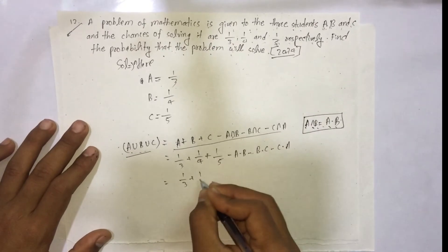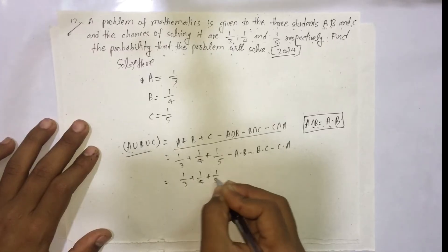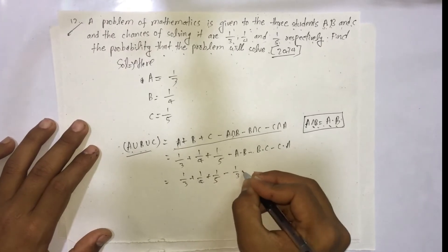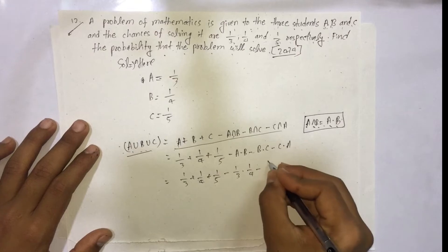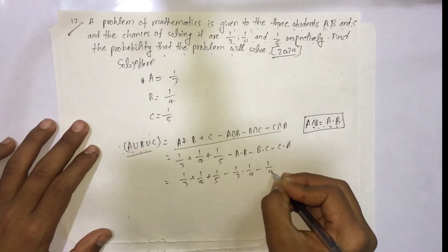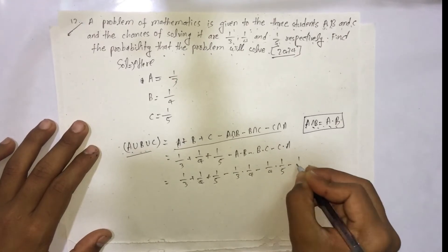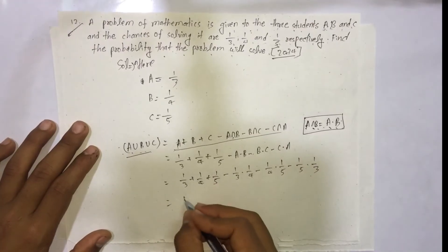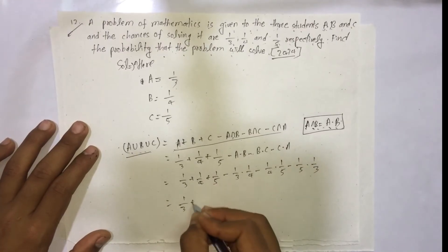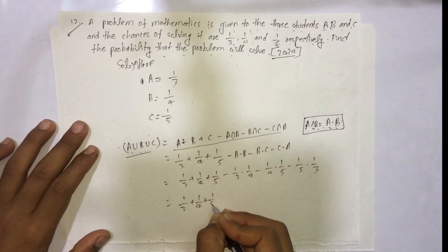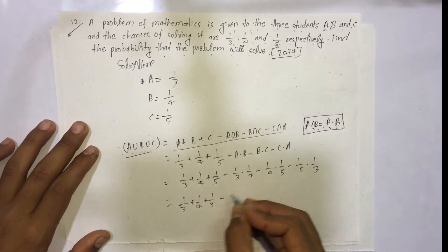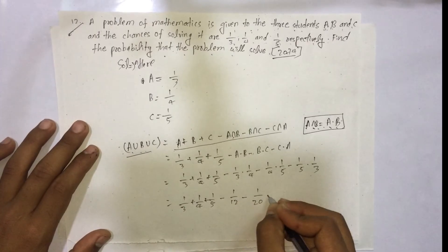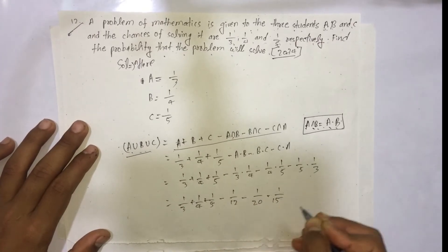So we have 1/3 + 1/4 + 1/5 minus (1/3 × 1/4) minus (1/4 × 1/5) minus (1/5 × 1/3), which gives 1/3 + 1/4 + 1/5 minus 1/12 minus 1/20 minus 1/15.